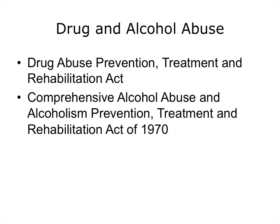The two main laws governing drug and alcohol abuse information are the Drug Abuse Prevention, Treatment, and Rehabilitation Act, as well as the Comprehensive Alcohol Abuse and Alcoholism Prevention, Treatment, and Rehabilitation Act of 1970. These regulations restrict disclosure of patient-specific information. Specifically, these laws prohibit the explicit identification of a patient's presence or past presence in a facility. Any type of disclosure, including for treatment or care coordination purposes, usually requires patient consent or a court order. The only exceptions are when someone's life is in danger or as required under other laws.